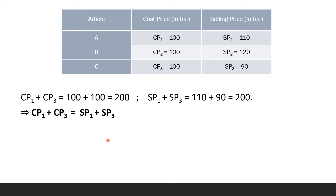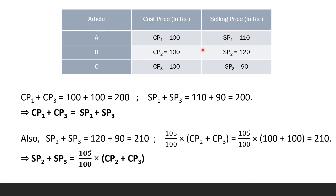Now let us check for condition 2. It is given that he gains 5% when combined selling prices of B and C are considered. That is, SP2 plus SP3 equals 105% of CP2 plus CP3. SP2 plus SP3 equals 120 plus 90, that is 210. Also, 105% of CP2 plus CP3 equals 105 divided by 100 into 200, which equals 210. Thus, condition 2 is also satisfied.